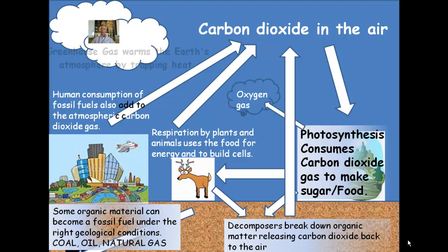Now, carbon dioxide is what we know as a greenhouse gas. Greenhouse gases are any gas that traps heat on the Earth's surface. Sunlight comes into the Earth, it warms the Earth, and tries to escape as heat, especially at night. But the greenhouse gases — carbon dioxide suspected as one of them — act sort of like a blanket over the Earth to keep it warm. And so, we have global warming as an effect.